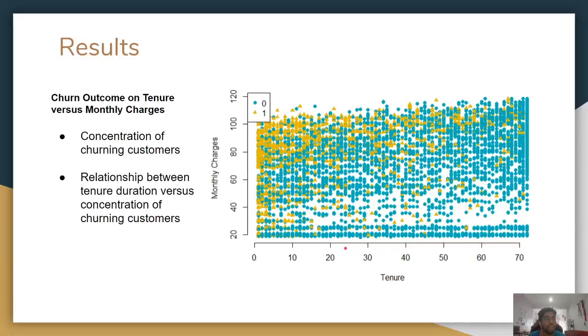Next, we have churn outcome on tenure versus monthly charges. We can see here the concentration of churning customers is concentrated at high monthly charges with low tenure duration. Also, we could see the relationship between the tenure duration versus the concentration of the churning customers. As the tenure duration lengthens, we see that there are less concentration of churning customers. The company has to focus on this part, basically, in determining why the customers are churning.